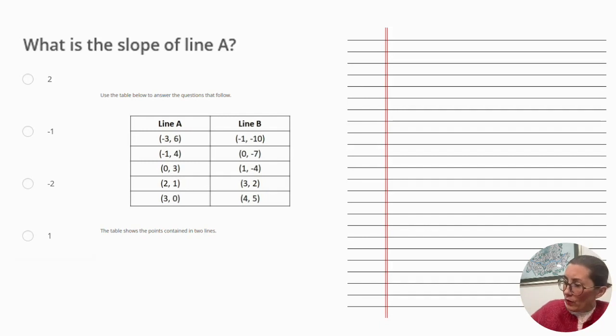we look at the rise over the run, or y over x. This is the difference between two points on the line.